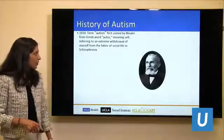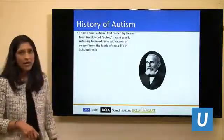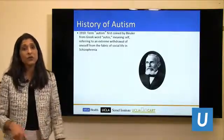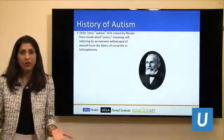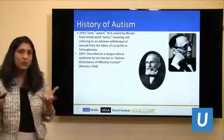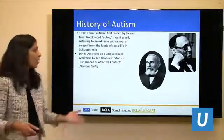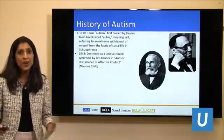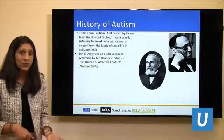I always like starting with a historical context. The term autism was actually coined in 1910 by Eugene Bleuler, a clinician who cared for individuals with schizophrenia. He used the term autism to describe the withdrawal from the social fabric of the world that many individuals with schizophrenia demonstrated. It wasn't described as a unique clinical syndrome in children until Leo Kanner in 1943, who wrote a manuscript called 'The Autistic Disturbance of Affective Contact,' describing children with challenges in social interaction, communication, and repetitive behaviors.